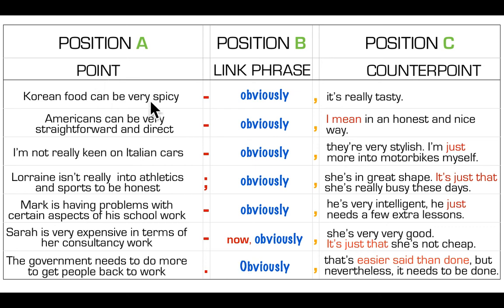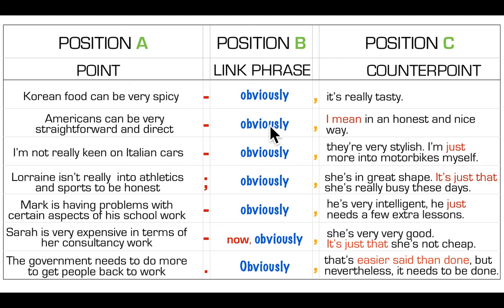For example: 'Korean food can be very spicy. Obviously, it's really tasty.' So maybe you're talking to a Korean friend and you might complain a little about how spicy Korean food is, but very quickly you follow up and clarify that you're not criticizing it — that it's really tasty. Another example: 'Americans can be very straightforward and direct. Obviously, I mean in an honest and nice way.' You'll notice 'I mean' in red — it often partners these follow-up phrases like 'obviously' because you're clarifying. You don't have to use it, but it's worth being aware of.